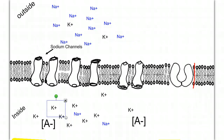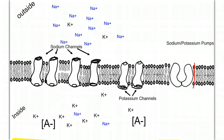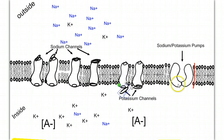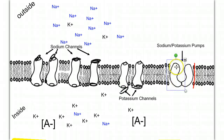In the cell membrane of the neuron, we have three important kinds of channels: sodium channels, potassium channels, and a sodium-potassium pump. The sodium channels have gates that are sensitive to stimulation and gates that are sensitive to voltage changes. Potassium channels have voltage sensitive gates. And the sodium-potassium pumps work with the help of ATP to move materials against the concentration gradient in an active transport.